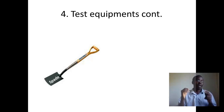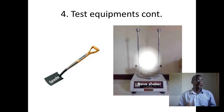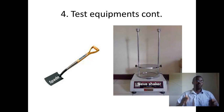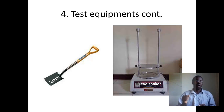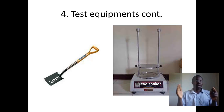The spade is used to pick large quantities of sand samples. The sieve shaker helps in the sieving process whereby a set of sieves is secured tightly on the sieve shaker, and with the supply of electricity the shaking of the sieves can be done with ease.